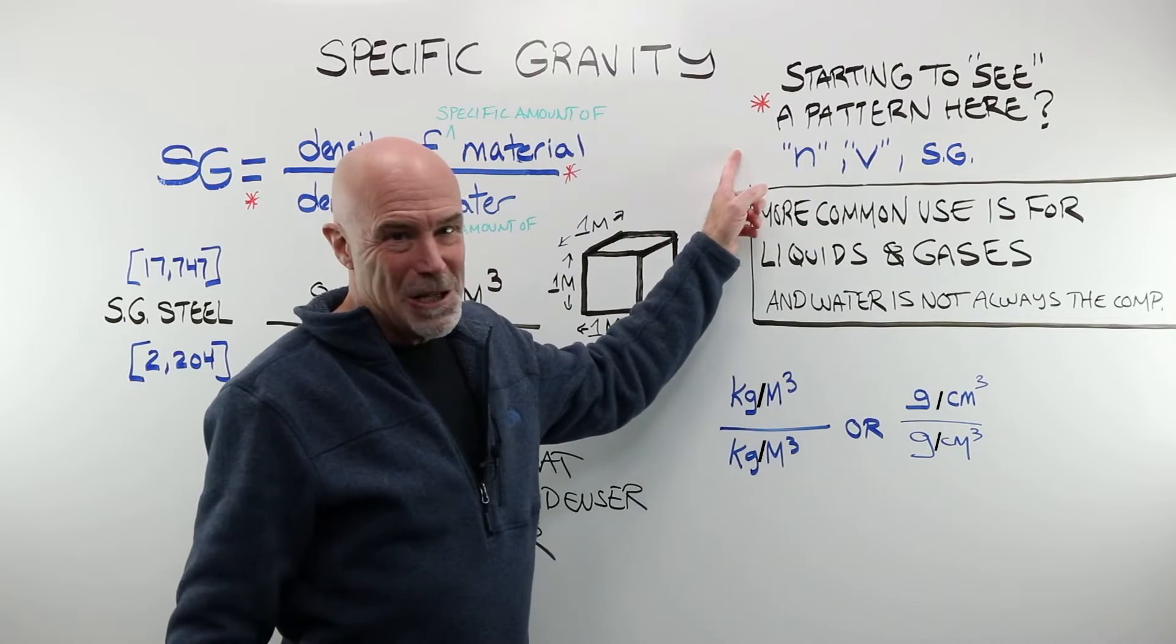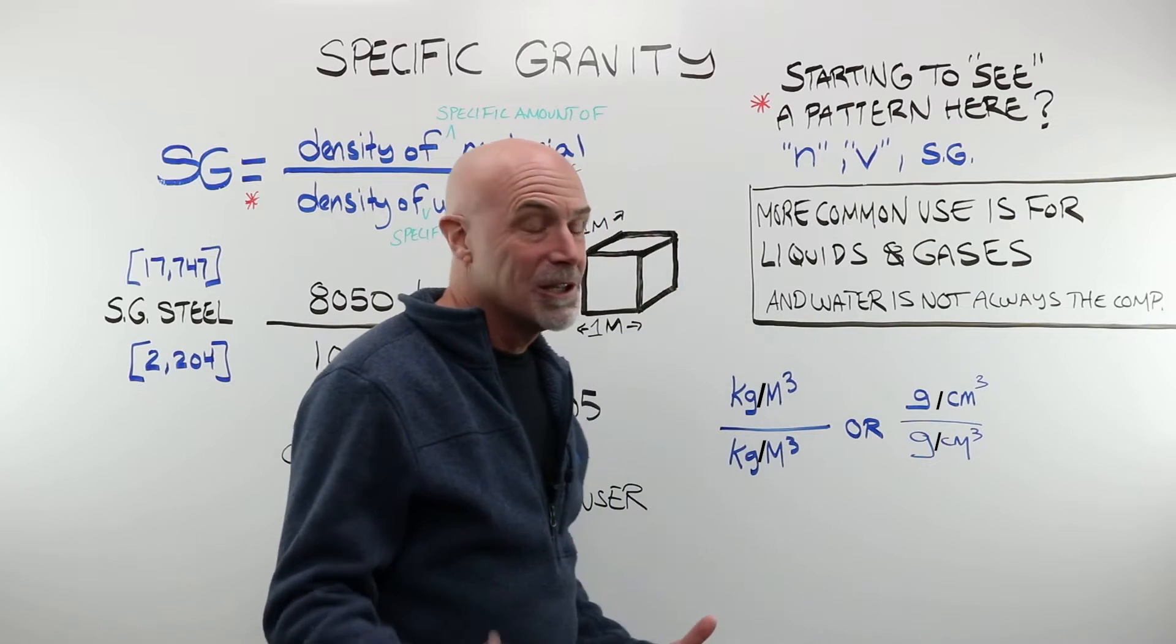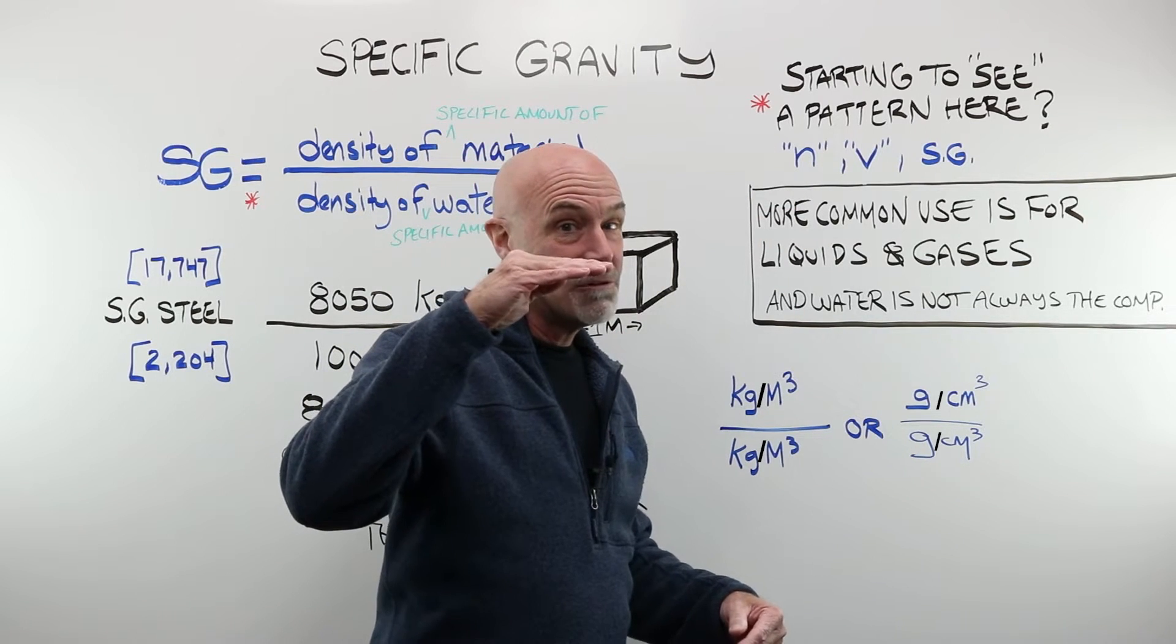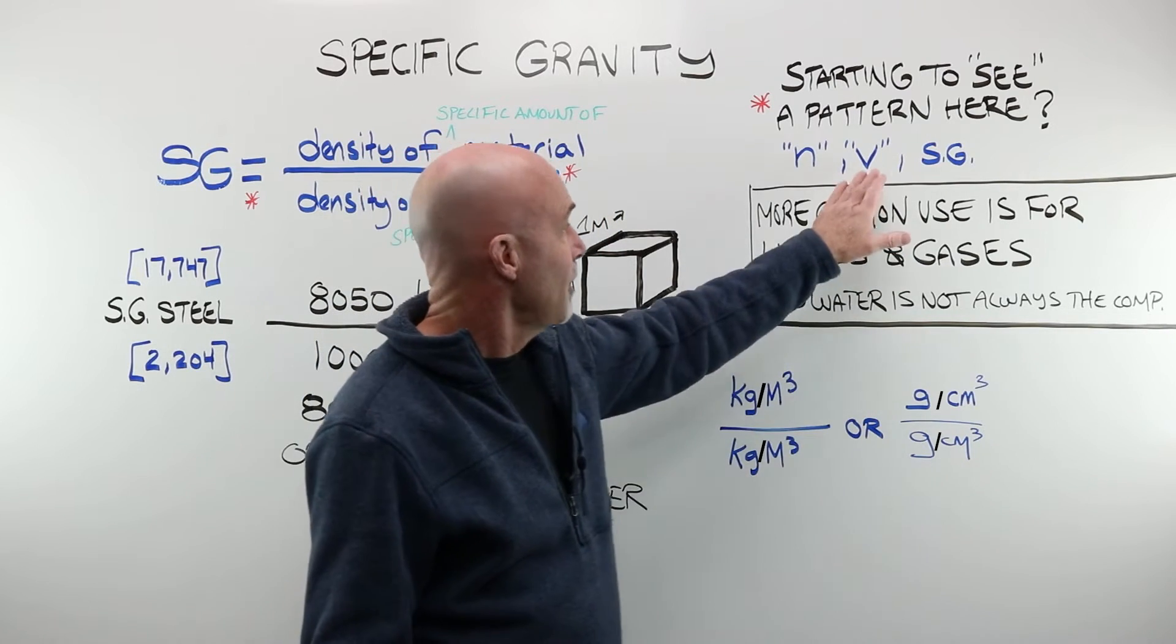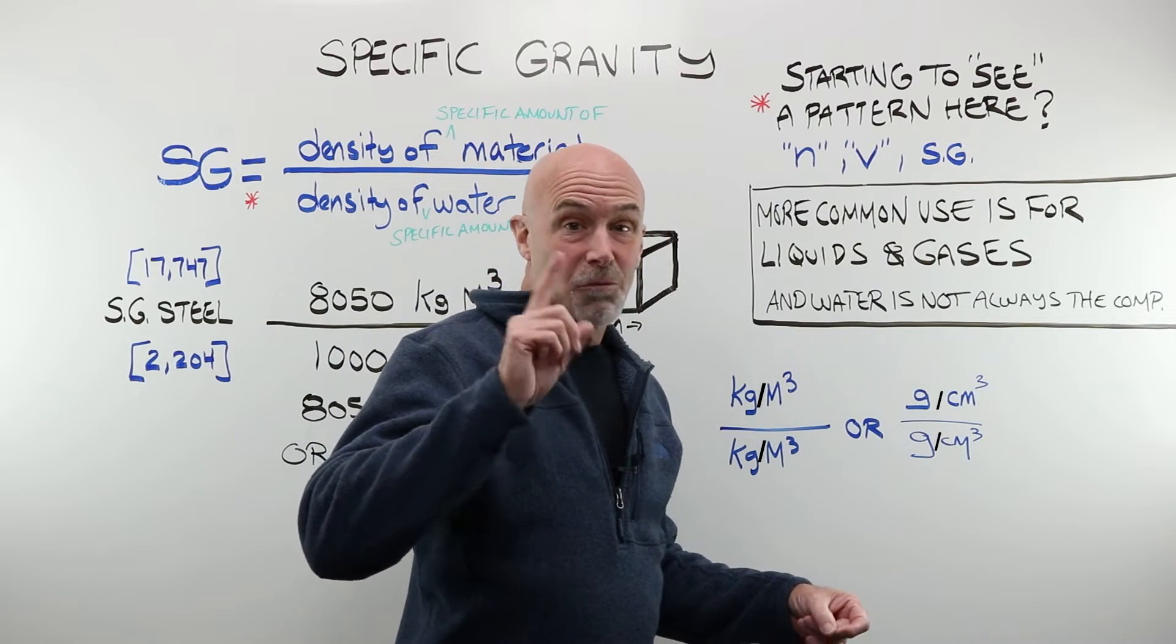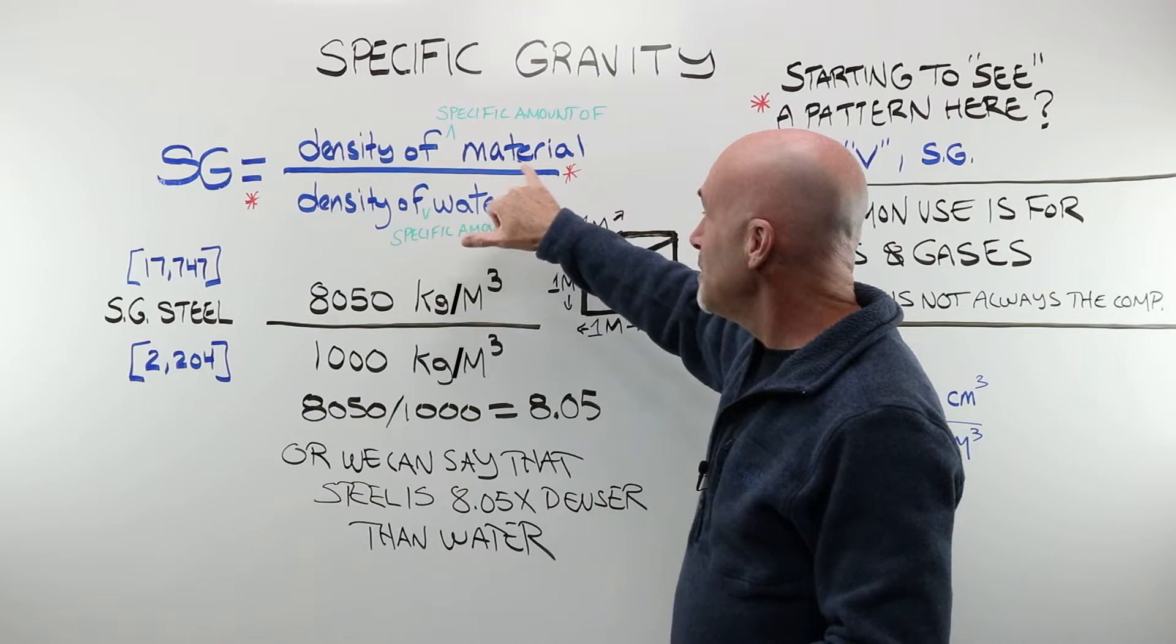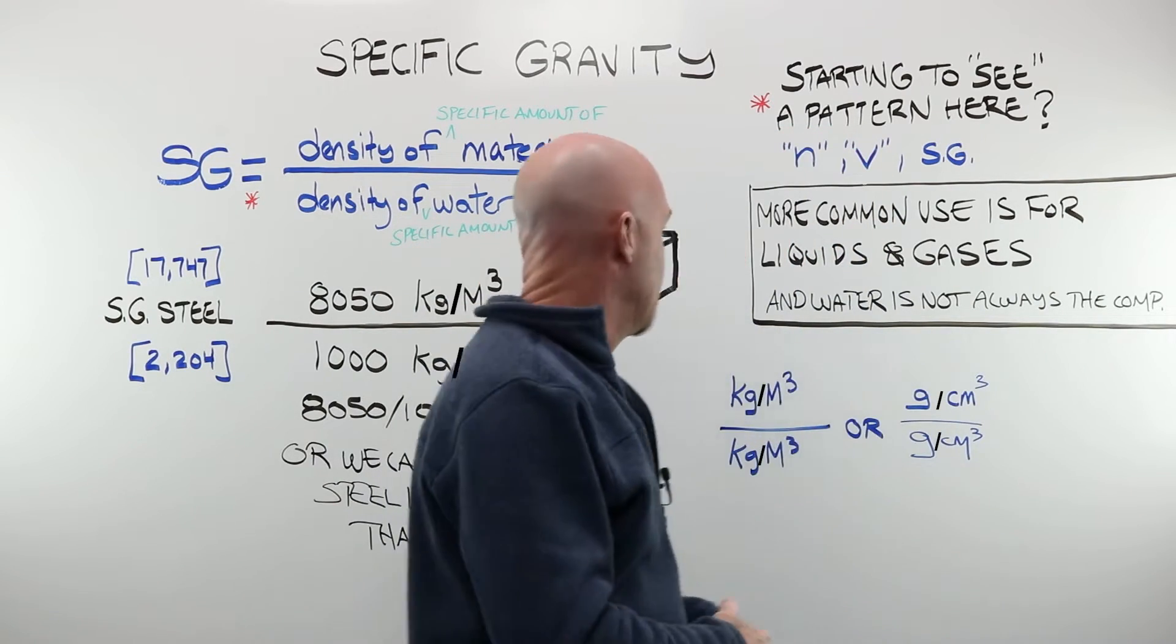Are you starting to see a pattern here? We have three terms that are commonly associated with lenses and lens material. Index of refraction: How does the speed of light in air or vacuum compare to the speed of light in a given material? V or Abbey: How does the index of refraction of one specific wavelength compare to that of two others? Specific gravity: How does the density of one material compare to the density of water? That's all we're doing here.